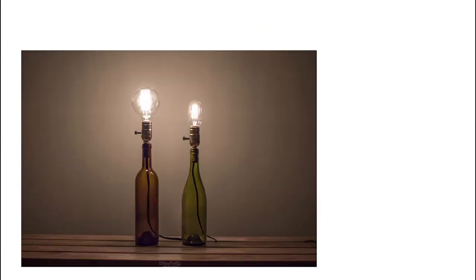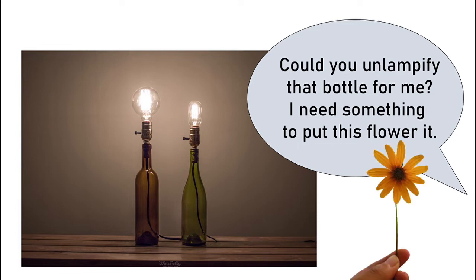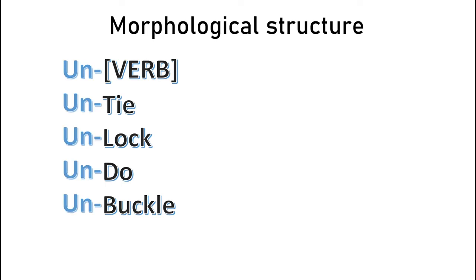So if I showed you this image and said, "Could you unlampify that bottle for me? I need something to put this flower in," you can understand perfectly well what I mean. That's because the internal structure of the word, or its morphological structure, contains a lot of information that you can use.